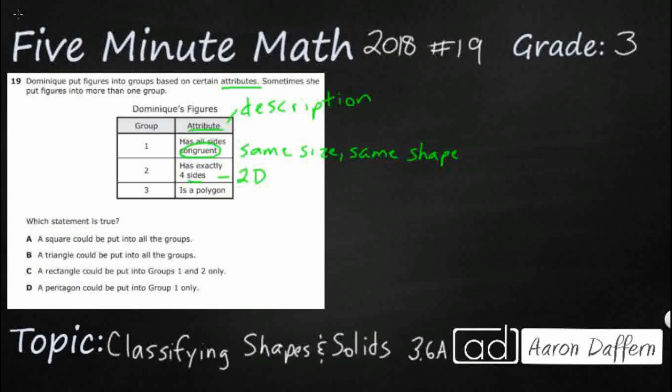Then we need to know what a polygon is. So a polygon is kind of a big term. Polygons have two characteristics, two attributes. They are all closed and they all have straight sides.